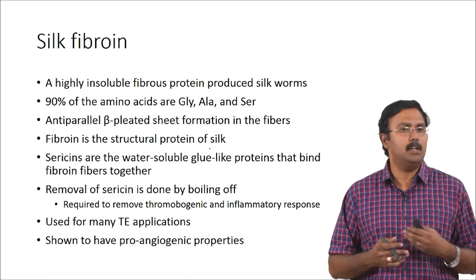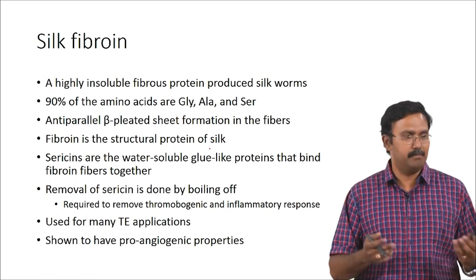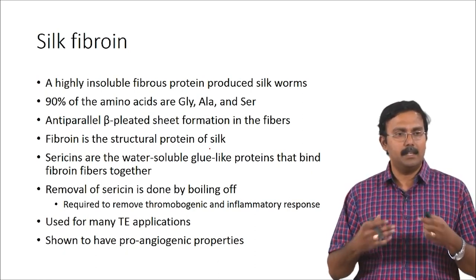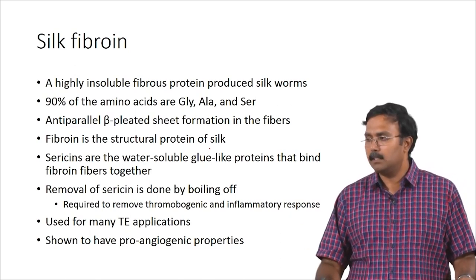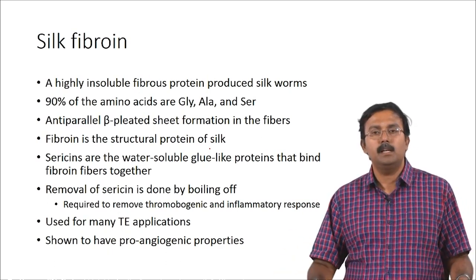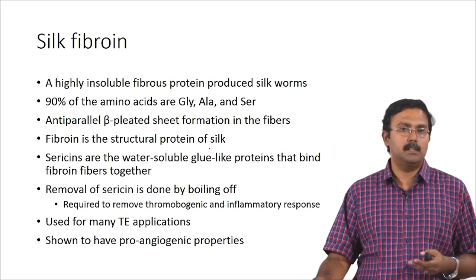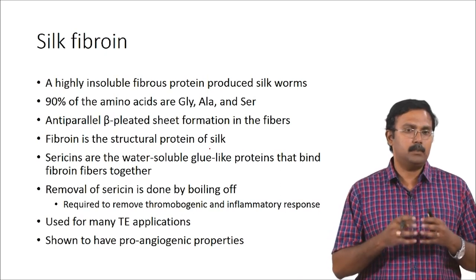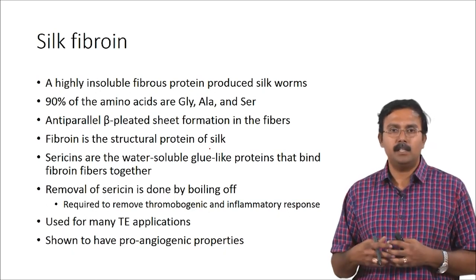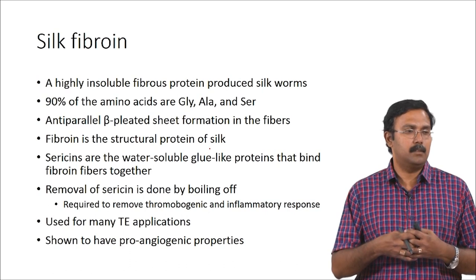Silk is a highly insoluble fibrous protein produced by silkworms. Bombyx mori silk fibroin is what has been extensively studied, but Professor Kundu and Bhiman Mandal are also working on non-mulberry silkworms native to India to see how the silk fibroin of those is applicable for tissue engineering applications. About 90 percent of the amino acids are glycine, alanine, or serine and these have anti-parallel beta-pleated sheets which form the fibers. Silk contains two proteins: fibroin, which is a structural protein, and sericin, a water-soluble glue-like protein that binds fibroin fibers together.